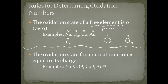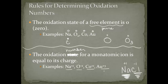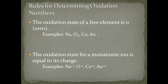The second rule: if you have a monatomic ion, the oxidation number is equal to its charge. For example, in sodium chloride (NaCl), sodium's oxidation number is +1 and chloride's oxidation number is -1. Similarly, sodium ion is +1, oxide is -2, cobalt in this case is +1, and gold in this case is +3 — whatever the ion's charge is, that is its oxidation number.